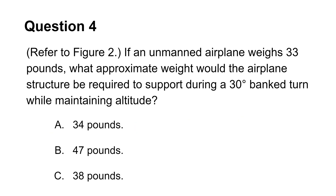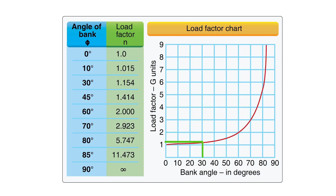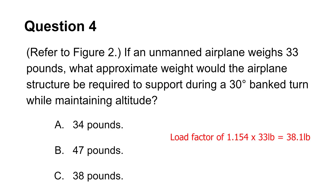This question is similar to the previous one. From before, we know that the load factor will be approximately 1.2, but we can get an even more precise measurement by looking at the adjacent table. The load factor for a 30 degree banked turn is 1.154. Multiply this load factor by the weight of 33 pounds. What you get is 38.1 pounds, which makes C the answer.